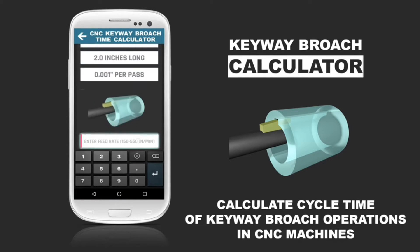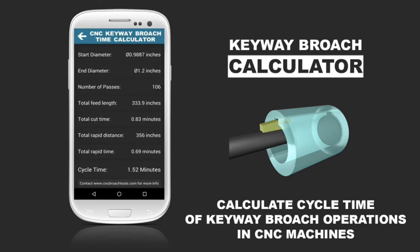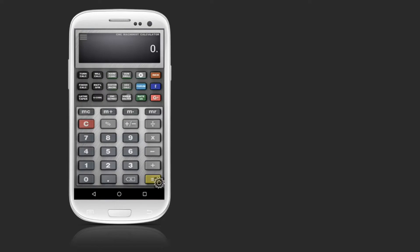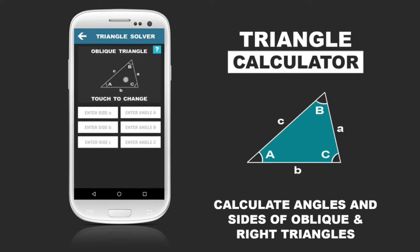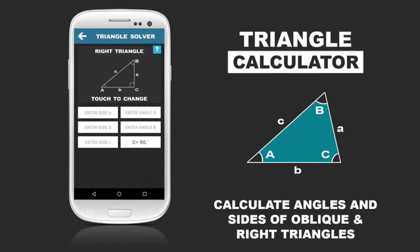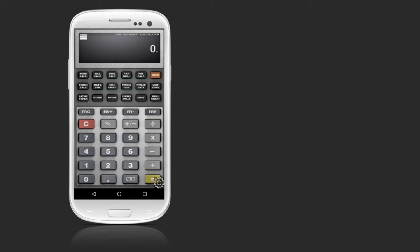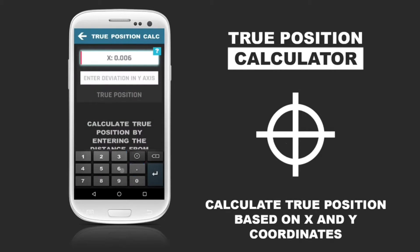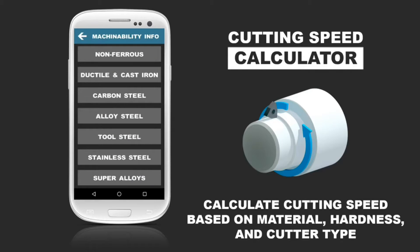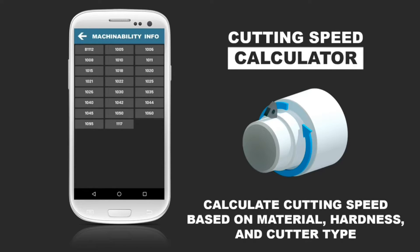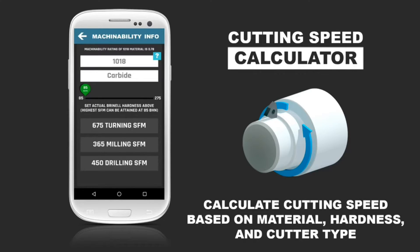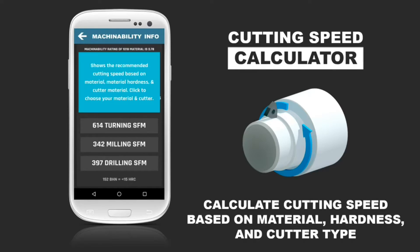Experience precision like never before with our milling functions, including cusp height calculators, radial chip thinning calculators, effective diameter calculators for ball end mills, IPT to IPM conversion tools, cutting speed calculators, and SFM to RPM conversions.